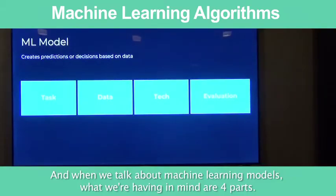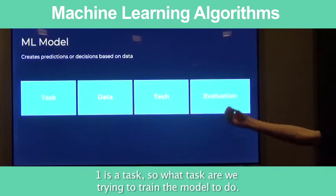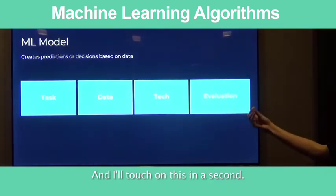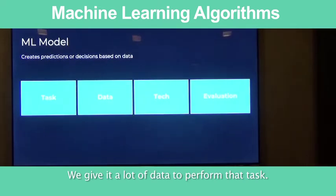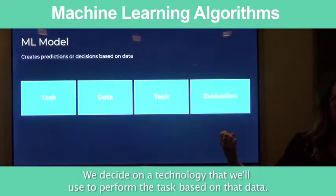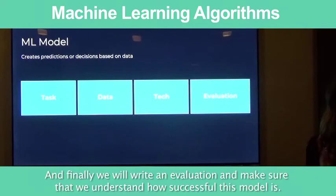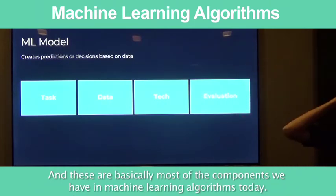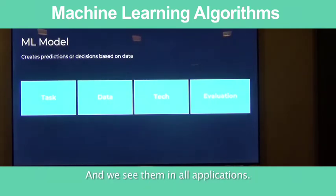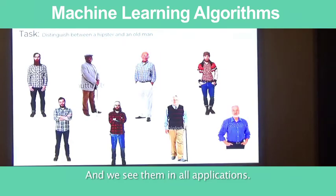When we are talking about machine learning modules, what we have in mind are four parts. One is a task — what task are we trying to train the model to do. We give it a lot of data to perform that task, we decide on a technology to perform the task based on that data, and finally we run evaluation to understand how successful the model is. These are basically most of the components that we have in machine learning algorithms today, and we see them in all applications.